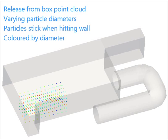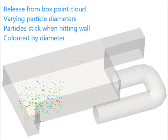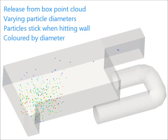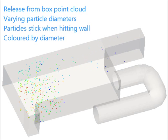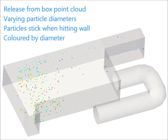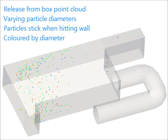In this first example, particles with varying diameters are released from a box-shaped point cloud. The colours of the particles represent their diameters, and we can see the red particles, which are the larger and heavier ones, exit the domain slower than the other ones.